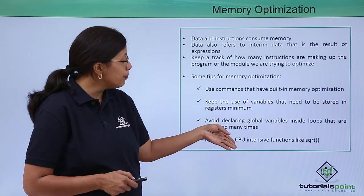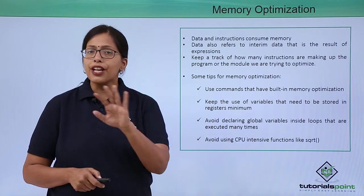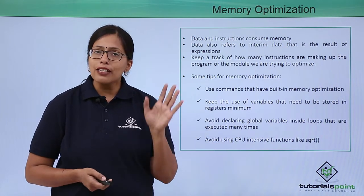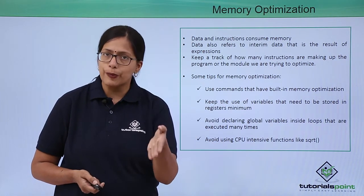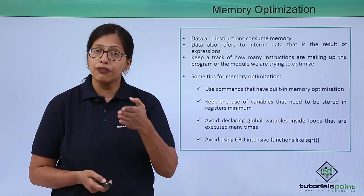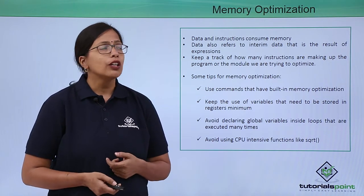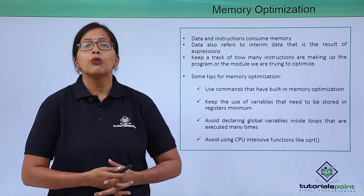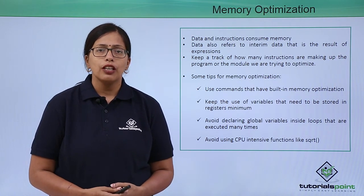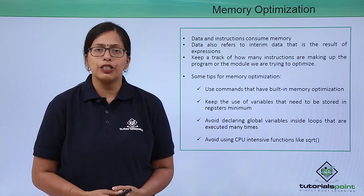Avoid using CPU-intensive functions like square root. Some functions use lots of memory space — get to know which ones are specific to your programming language and avoid them, or if you must use them, keep their use to a minimum. In this video we learned how to optimize code for execution time and memory. In the next video we will discuss program documentation.